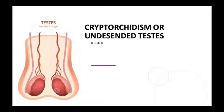Welcome to our new pathology class. Today we will start the last topic of systemic pathology, which is the male reproductive system. We will begin with the first disease: cryptorchidism — a very important disease from the exam point of view, with many questions asked about it.